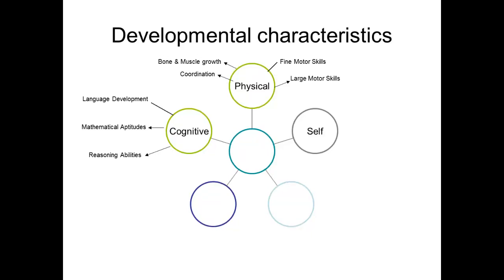A third area of development is self-development. Like other areas, it too is complex. It deals with how we grow in terms of self-development — in short, how we see ourselves, our attitudes about ourselves, our self-efficacy, or how efficient we think we are, and how we develop as a person with control over our emotions. Emotional responses should develop as a child develops, and there are definite ages and stages for this.